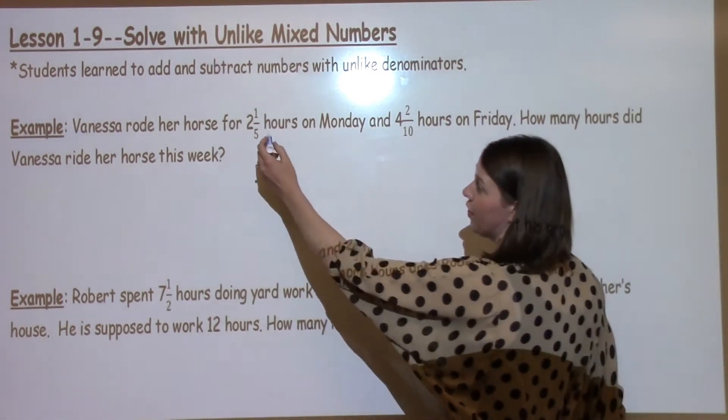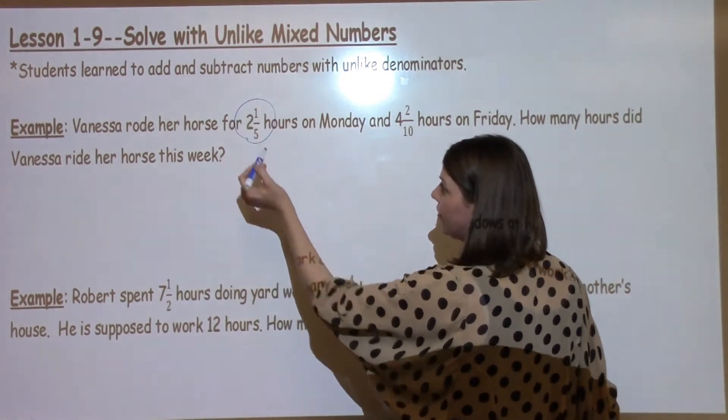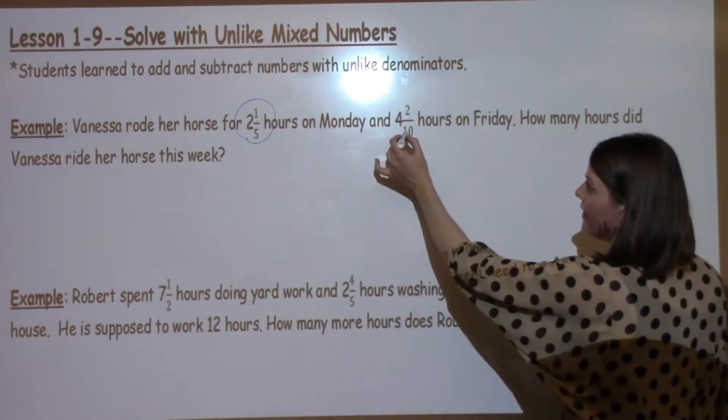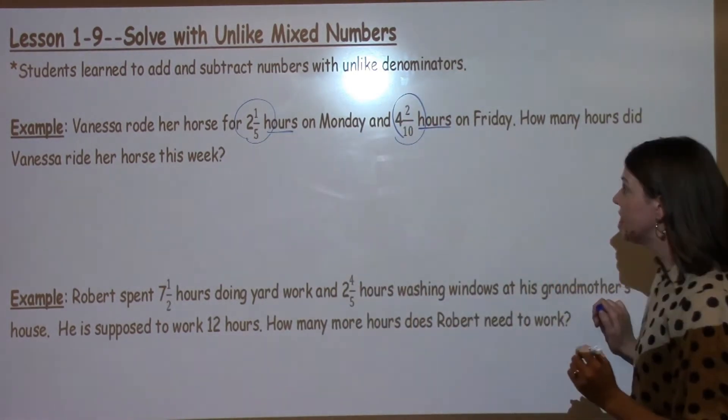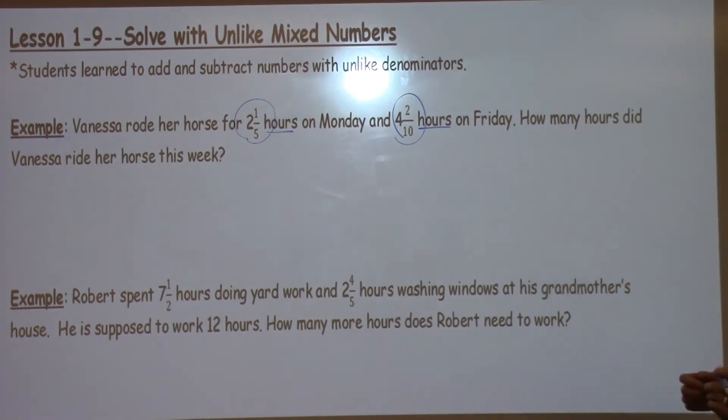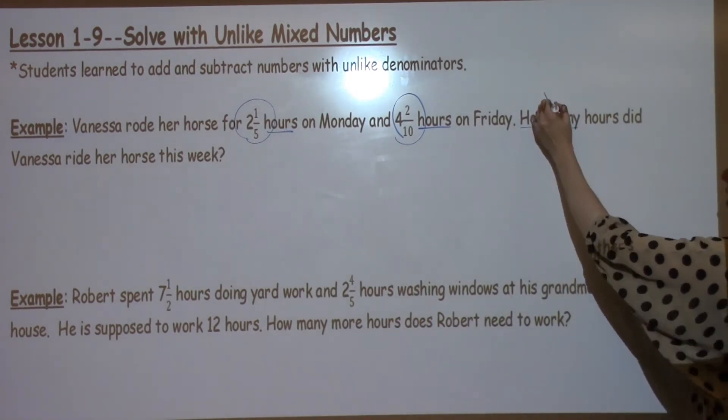The first thing I'm going to do is look for my key numbers. So I have 2 and 1 5th hours and I have 4 and 2 10th hours. I know my label is going to be hours, so I always underline that for my answer as well. How many hours did she ride this week? It tells me I need to add those together.